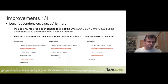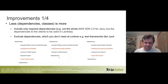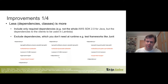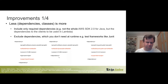Less dependencies are better in the serverless world. Include only required dependencies — don't import the whole SDK 2.0, only the specific service like DynamoDB. Also exclude dependencies with test scope, such as JUnit, that you don't need at runtime. Be as minimalistic as possible: it saves cold start time, improves performance, and saves money.